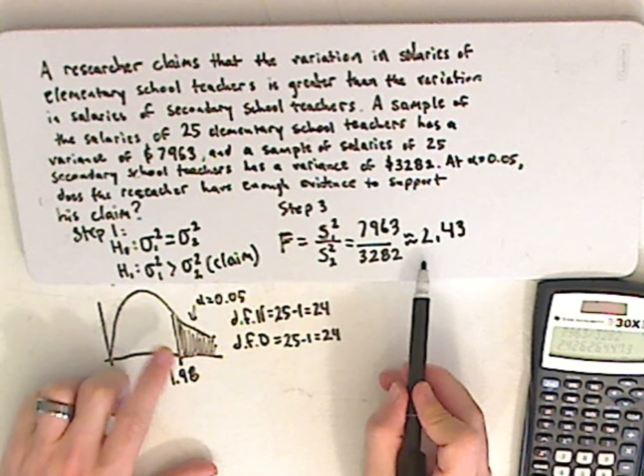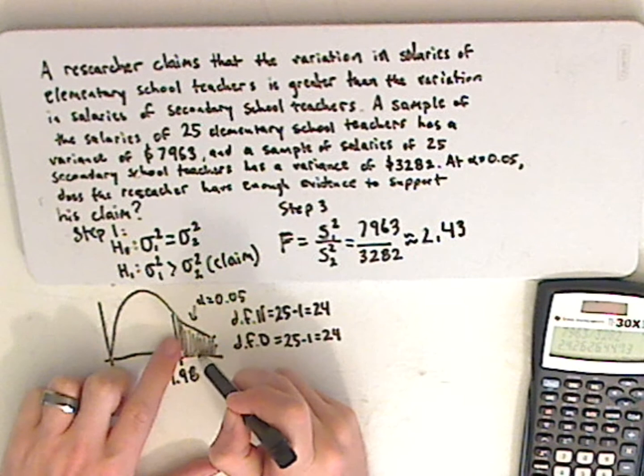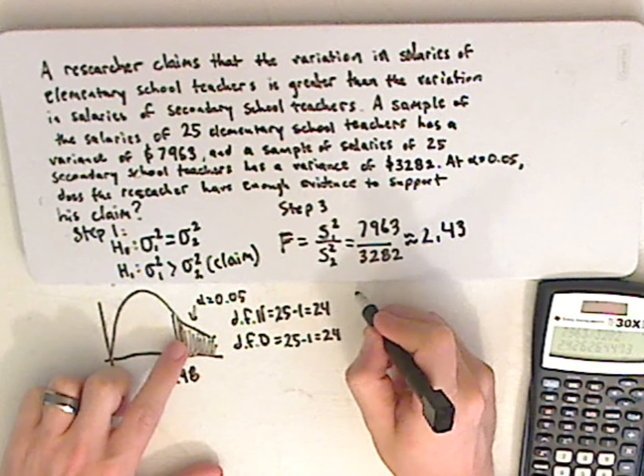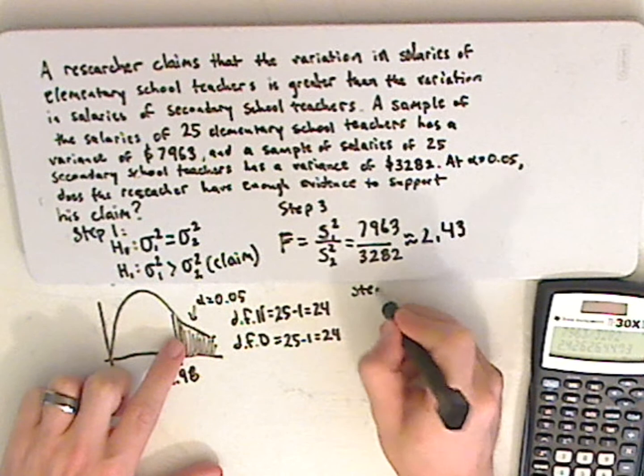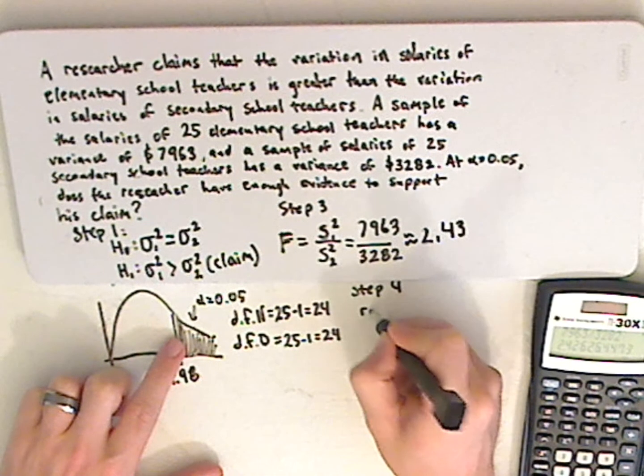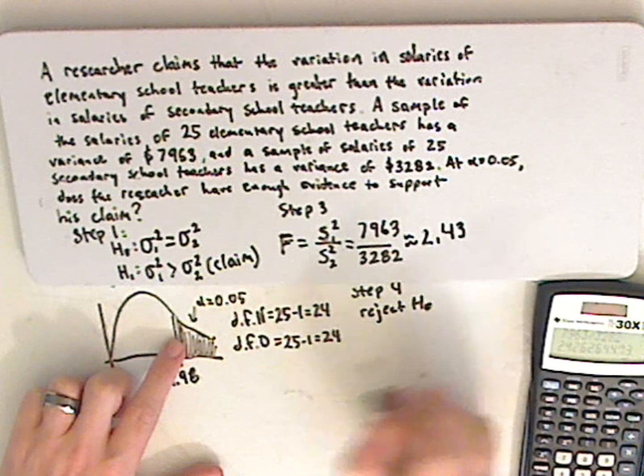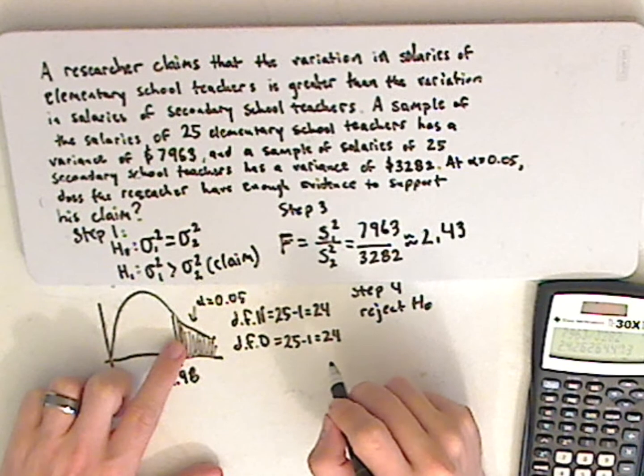Since that's 2.43, that falls in my rejection region. So since it falls in my rejection region, step 4 is going to reject the null hypothesis. Since I am rejecting the null hypothesis, that means I'm accepting the claim, which means I have enough evidence to support it.